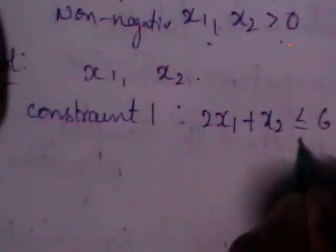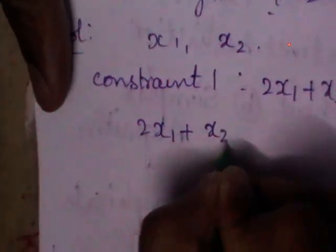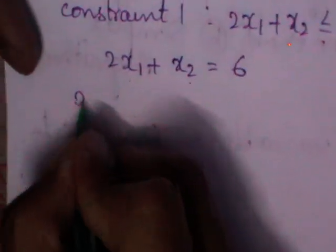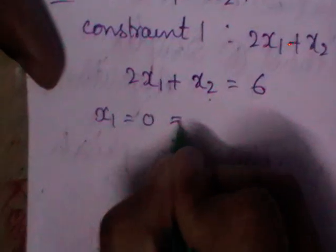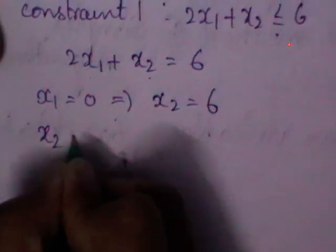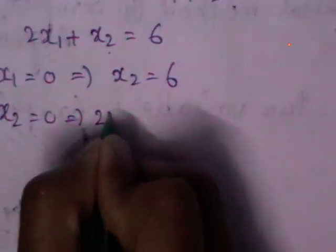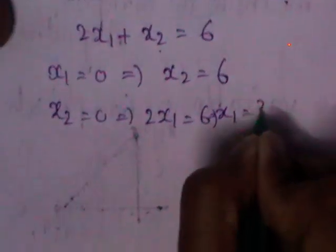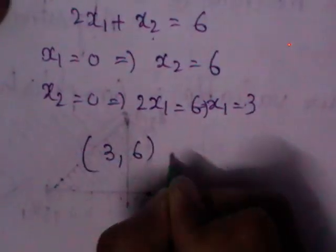Even though the first constraint is of less than or equal to type, take it as an equation: 2x1 plus x2 equals 6. Put x1 equal to 0 — you get x2 equal to 6. Put x2 equal to 0 — you get 2x1 equals 6, which implies x1 equals 3. So the ordered pair for the first constraint is (3, 6).